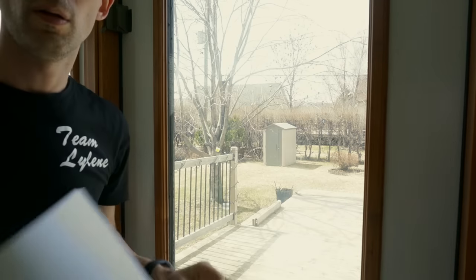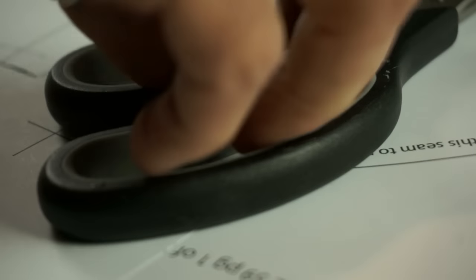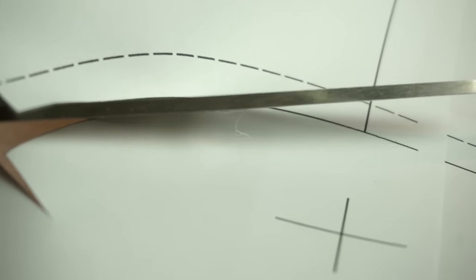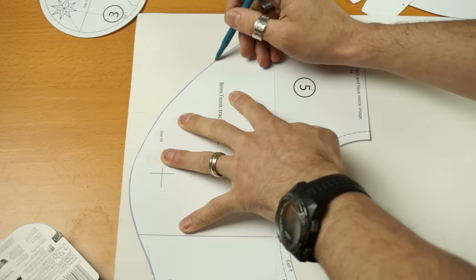Now get away from all that natural light and go downstairs into your dark basement workshop. Grab your scissors and start cutting out your pattern, cutting just to the outside of the black line. Once everything is cut out, grab a big sheet of craft foam and start tracing your patterns onto the foam.